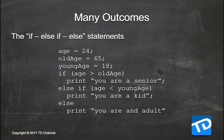Sometimes you need to support many different outcomes, and for this you use the if-else-if-else statement. The first test is: if age is greater than old_age, print 'you are a senior.' Else if age is less than young_age, print 'you are a kid.' And then else — we don't run another test, because we've covered the two conditions: are you older, or are you younger? Since there's a chance you're somewhere in the middle, we need an else statement, which prints 'you are an adult.'